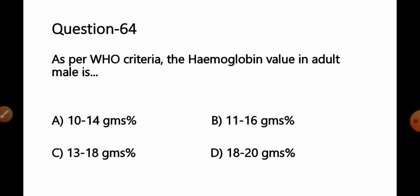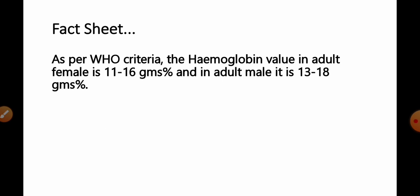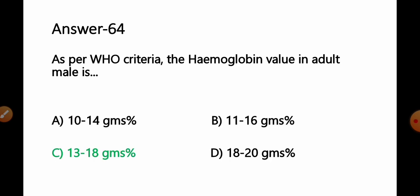Question number 64: As per WHO criteria, the hemoglobin value in adult male is — option A: 10–14 g%, B: 11–16 g%, C: 13–18 g%, D: 18–20 g%. As per WHO criteria, hemoglobin in adult females is 11–16 g% and in adult males it is 13–18 g%. So option C, 13–18 g%, is the correct answer.